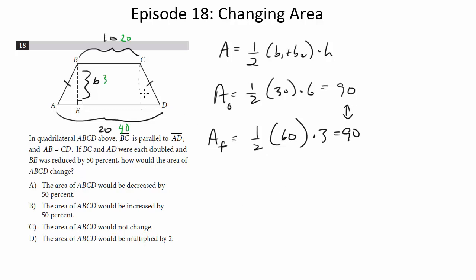So notice, actually, the area doesn't change. So we're going to pick choice C. And if you look at this abstractly, which is another way to do it, again, if you can do it two ways, do it both plug-in and the abstract way, that's awesome because it helps you make sure you're doing the question right.